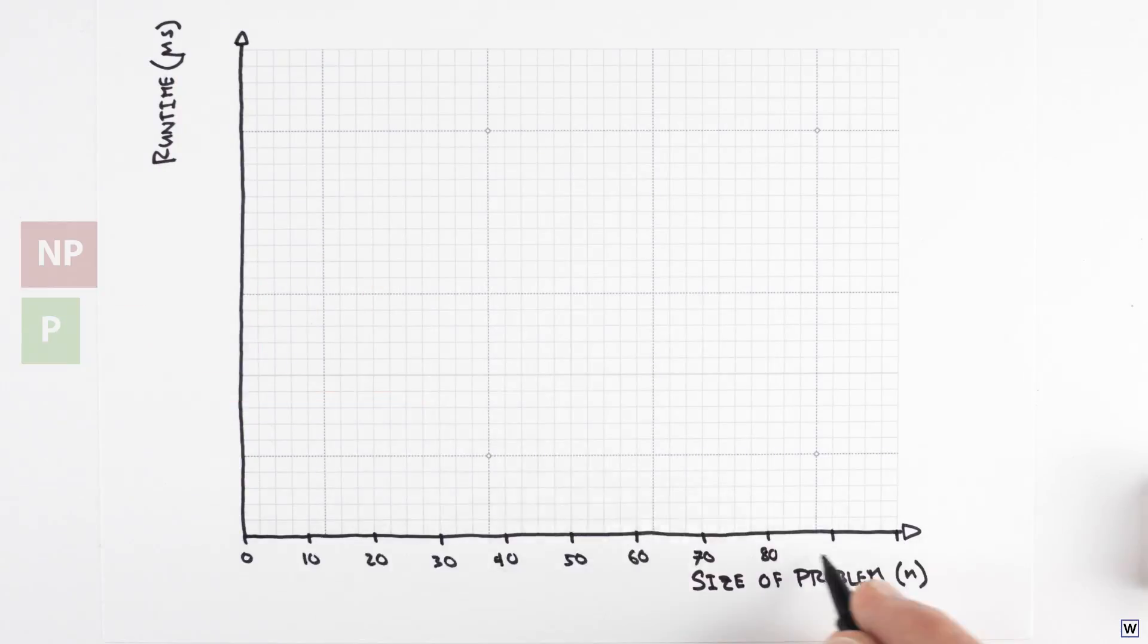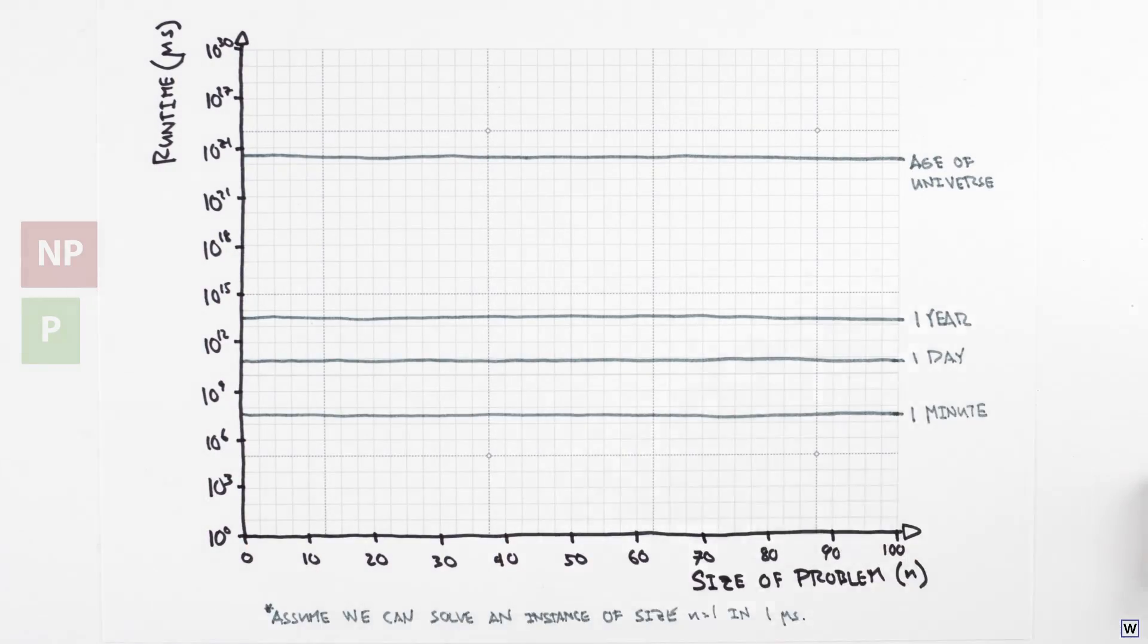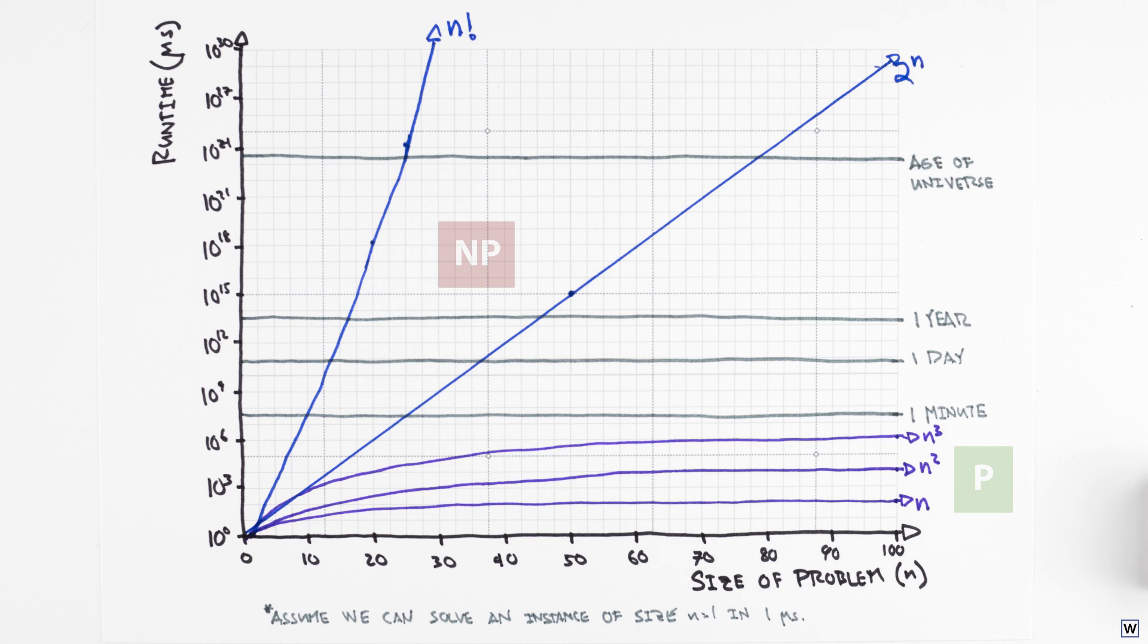As the size of our problem increases, the differences between these two classes become dramatic, meaning we can generally solve problems in P, while problems in NP quickly become intractable.